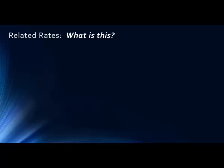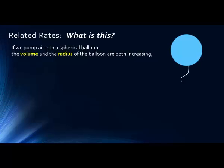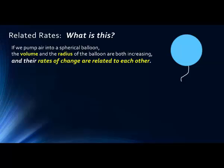Let's look at the concept of related rates and determine what this is. If we pump air into a spherical balloon, notice that not only is the volume of air increasing in the balloon, but the radius of the balloon is also increasing. So we know that their rates of change are related to each other — as the volume increases, the sphere gets larger, which means the radius increases.